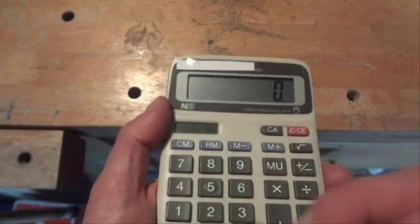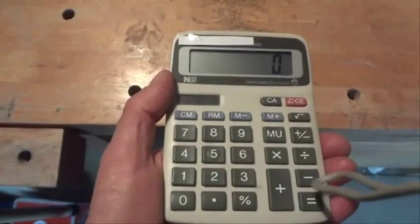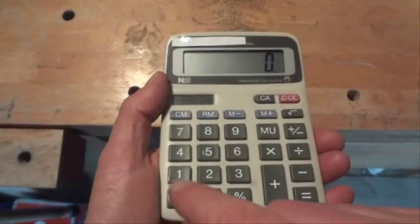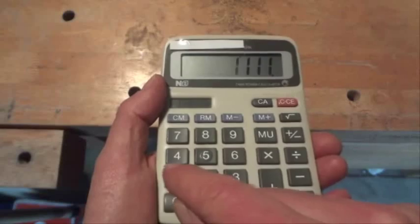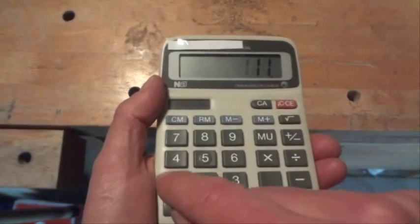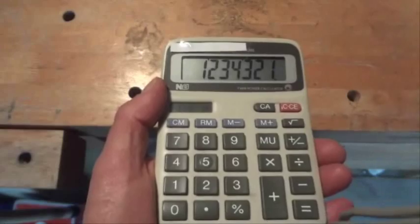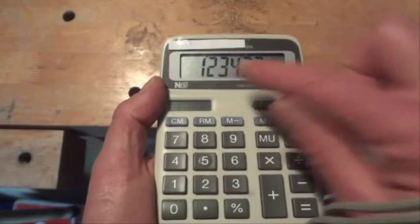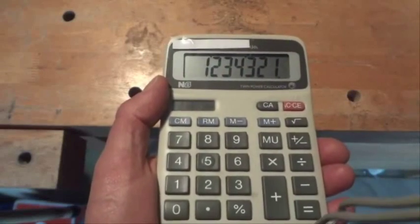OK, so I'll get my trusty calculator out to prove that that is correct. And we'll go 1, 2, 3, 4 1's times 1, 2, 3, 4 1's. And there we go. The answer is 1, 2, 3, 4, 3, 2, 1. All right.